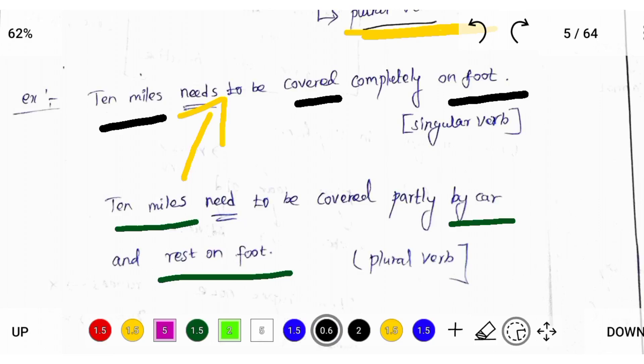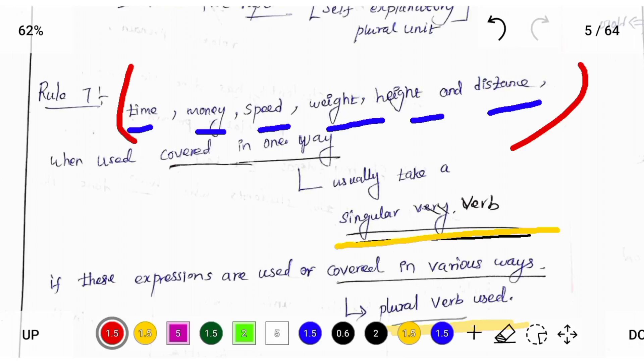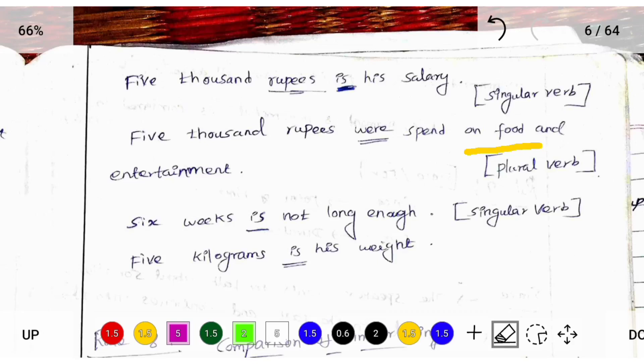The 7th rule is about when we covered this measurement in single way, so we should use singular verb. Otherwise, we should use plural verb. See this example.